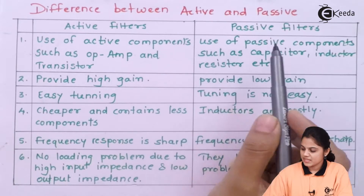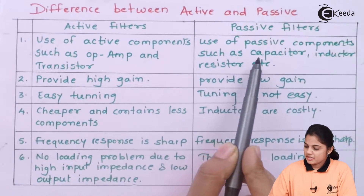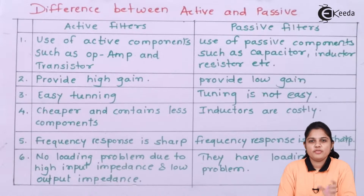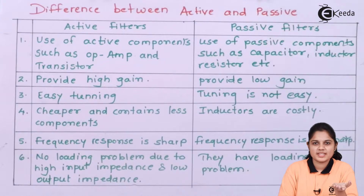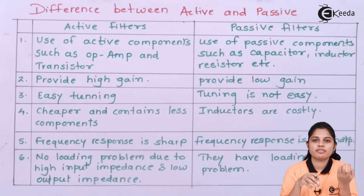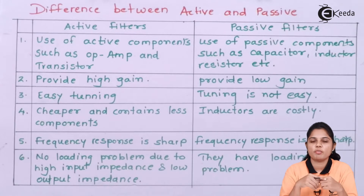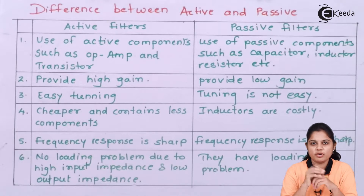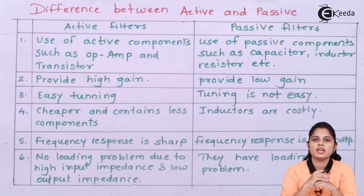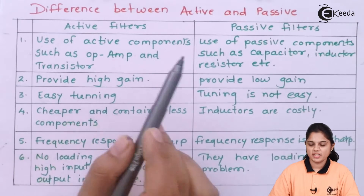Whereas passive filters use passive components such as capacitor, inductor, and resistor. If you use these components to design a filter — for example, an RC filter — RC stands for resistive-capacitive network, and this resistive-capacitive network can be used for filtering. Similarly, an inductive-capacitive network can also be used. If you use these types of components, that particular device is known as a passive filter. This is a major difference between active and passive filters.